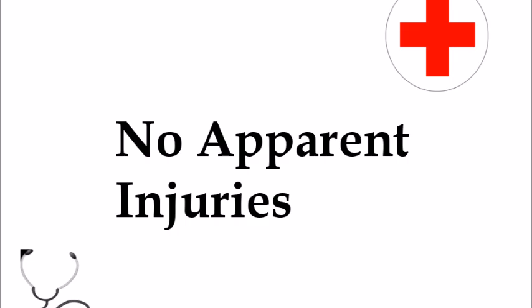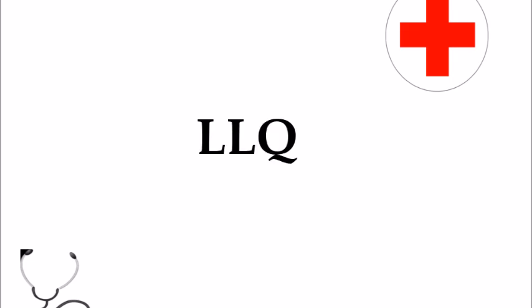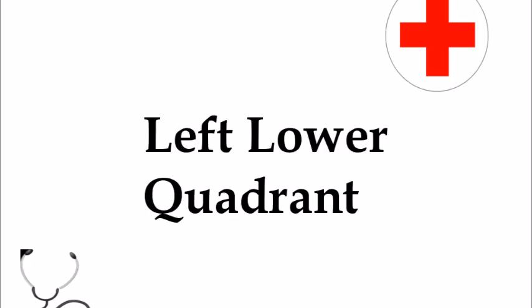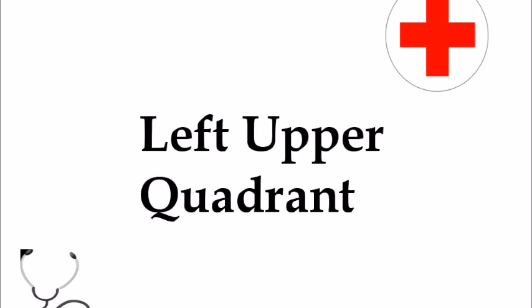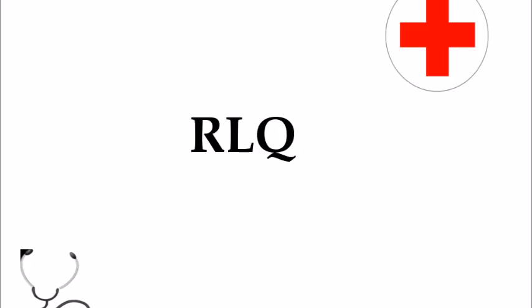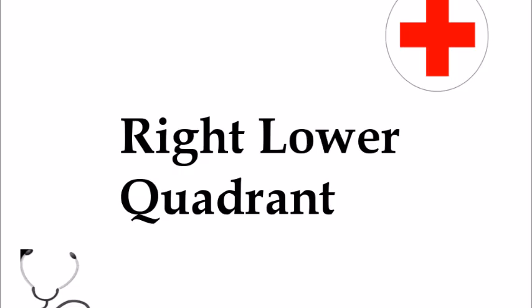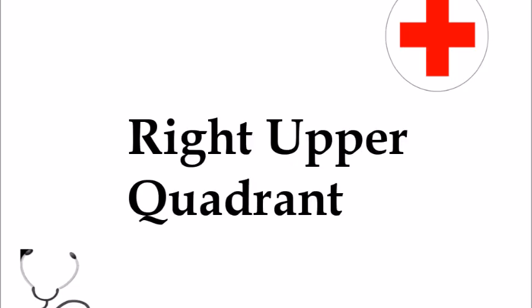These next abbreviations are associated with the abdomen and serve as a landmarking tool. We'll split it up into four imaginary quadrants. LLQ is left lower quadrant, LUQ left upper, RLQ right lower, and RUQ right upper.